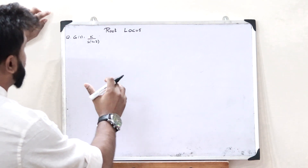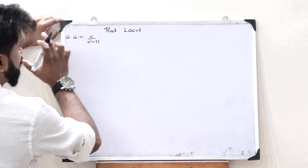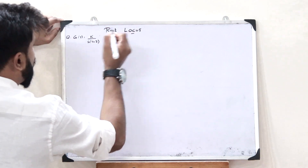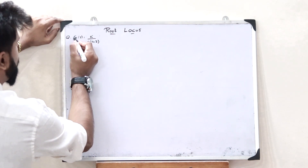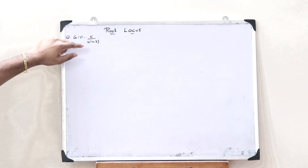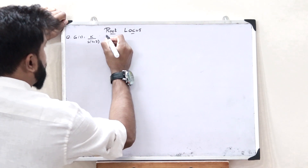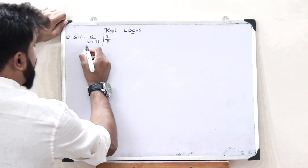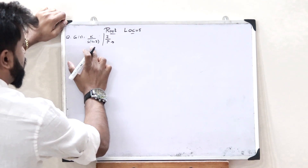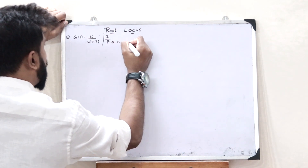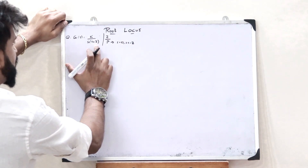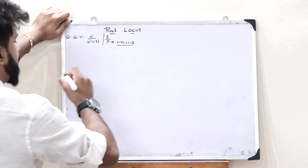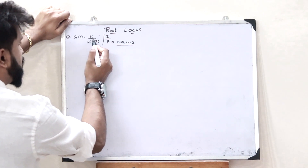Let us consider this particular question in which the open loop transfer function is given as G(s) = K divided by s(s+2). Let us now sketch the root locus. Here the numerator specifies the number of zeros and the denominator specifies the number of poles. The poles are at s=0 and s=-2. There are no zeros because the numerator has only the constant K.